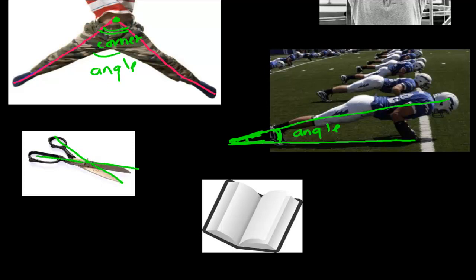The best example we see every day is scissors. One blade is one line, the other is another, and there is formation of angles — one, two, three, and four. Another very good example is a book: the length side and the breadth side form an angle, and in the pages also you can see corner formation.